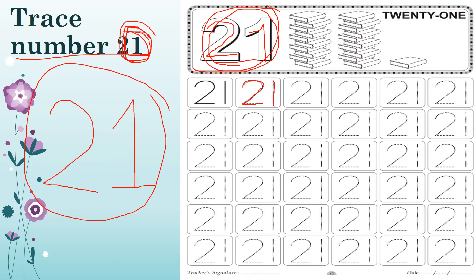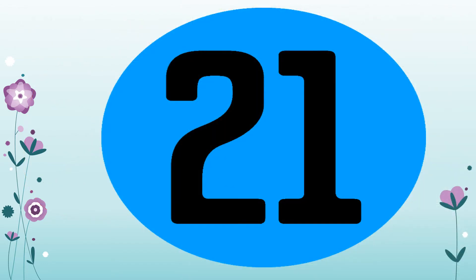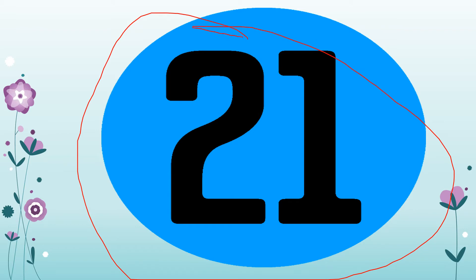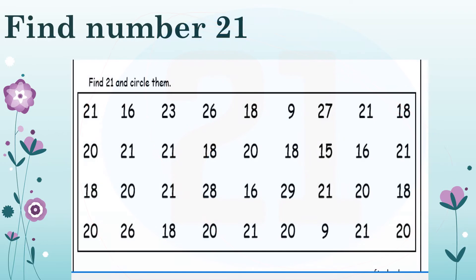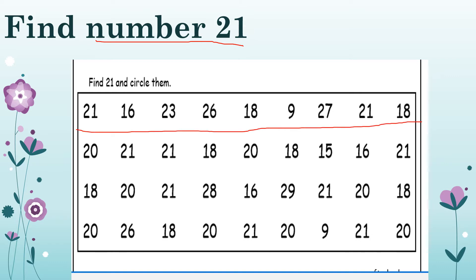Now let's try to find the number 21 in this box. From this area to this line — is this number 21? Yes, let's circle this 21. How about this one? No, it's number 16.